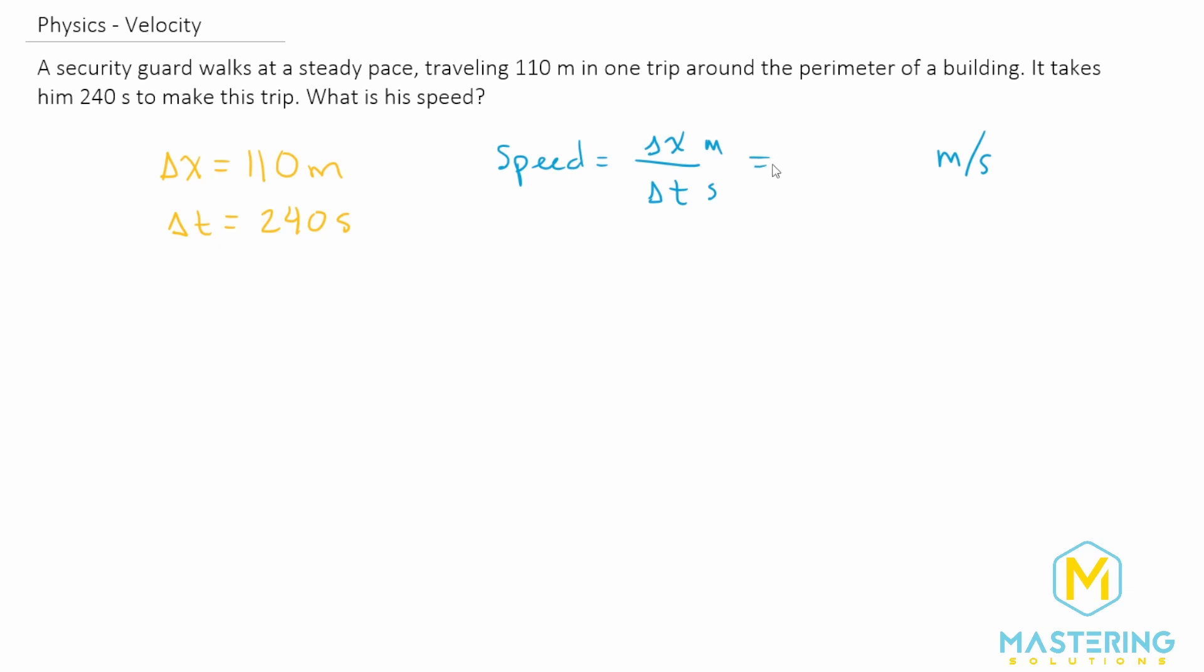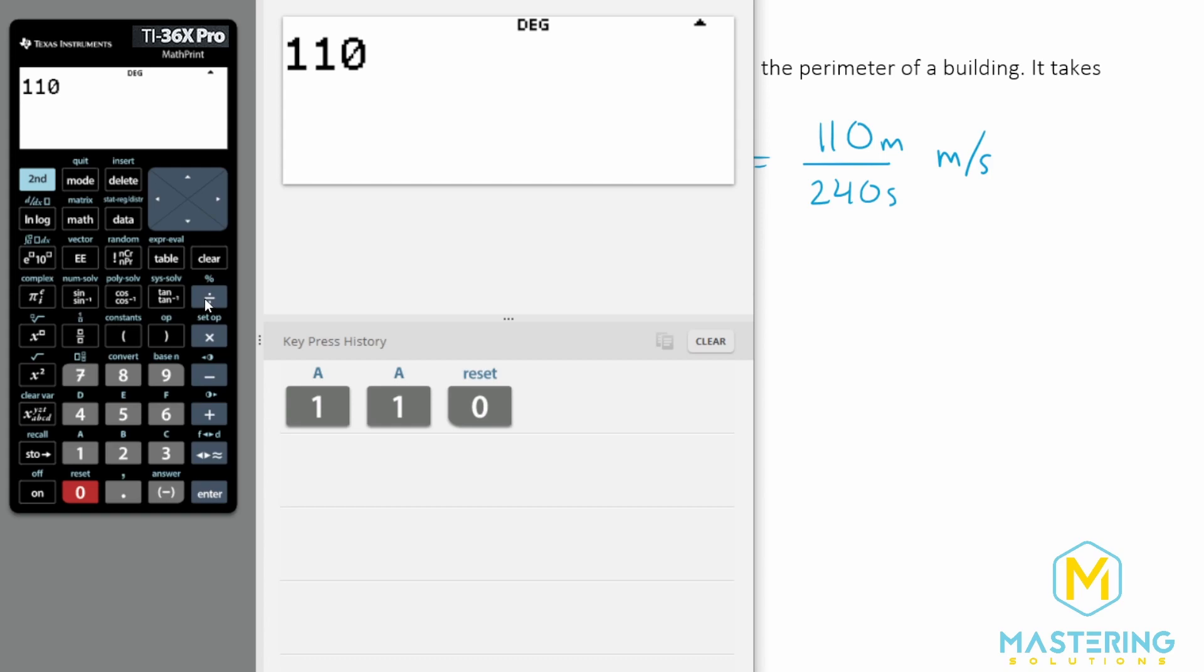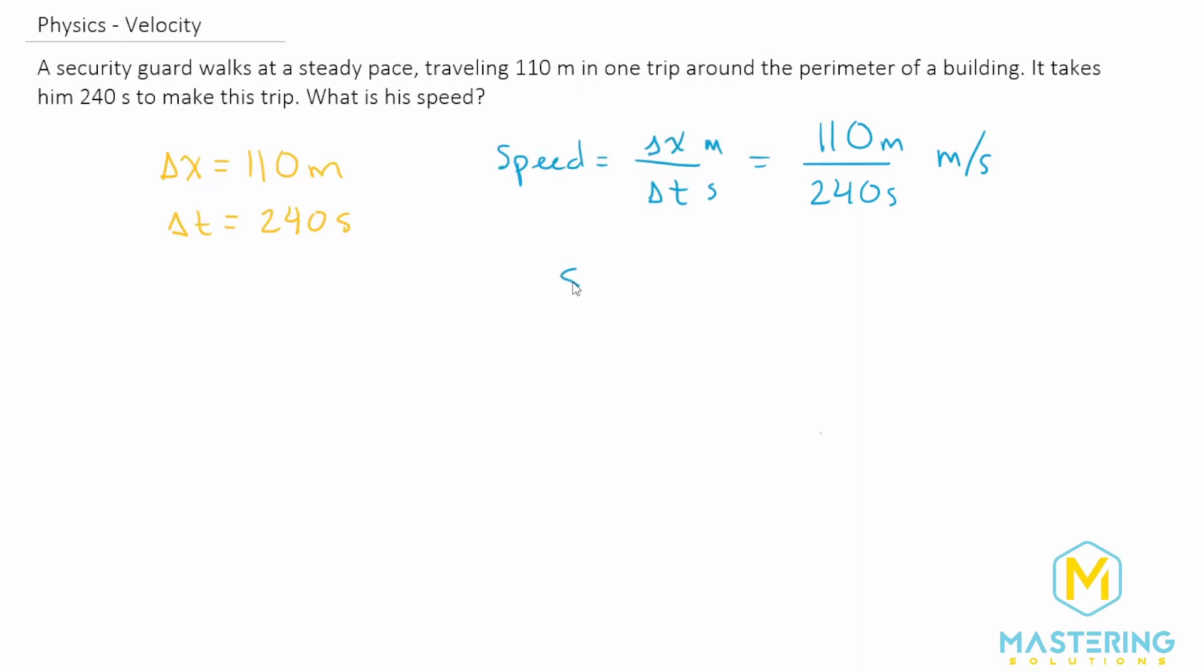So all we have left really is just to plug it in. So we have 110 meters divided by 240 seconds. 110 divided by 240. So the speed of the security guard as he is walking around the building rounded gives us 0.46 meters per second.